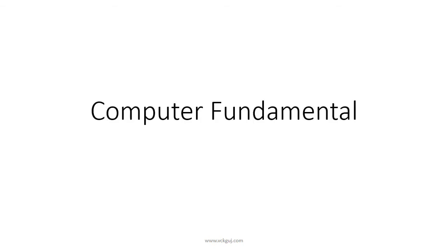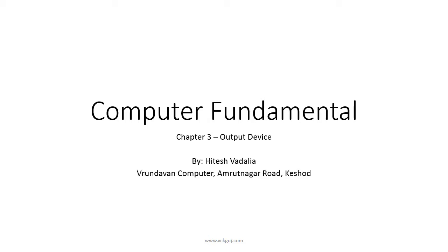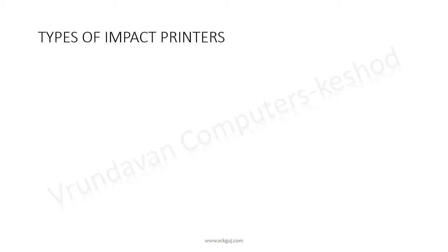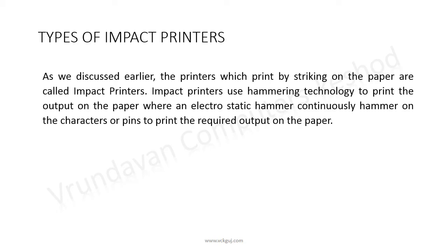Computer Fundamentals Chapter 3: Output Devices — Types of Impact Printers. As we discussed earlier, the printers which print by striking on the paper are called impact printers. The printer uses hammering technology to print the output on the paper, where an electrostatic hammer continuously hammers on the characters or pins to print the required output.